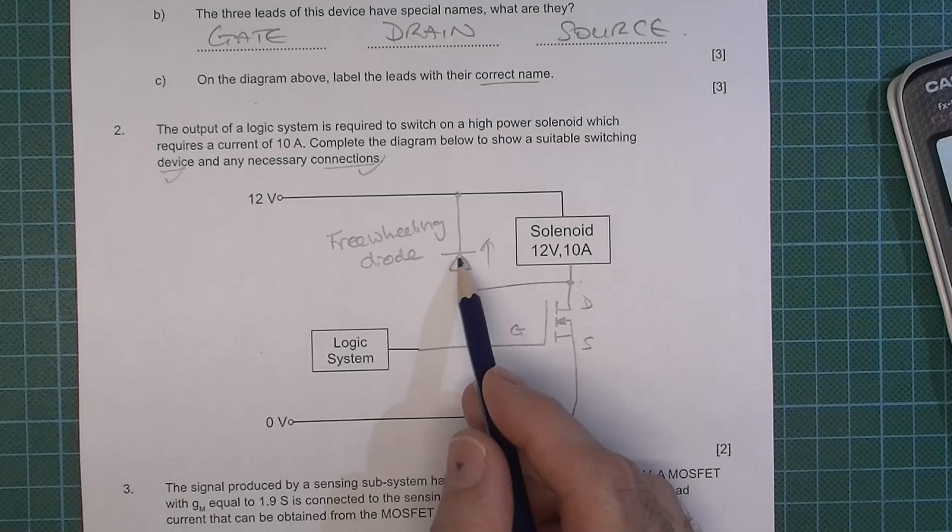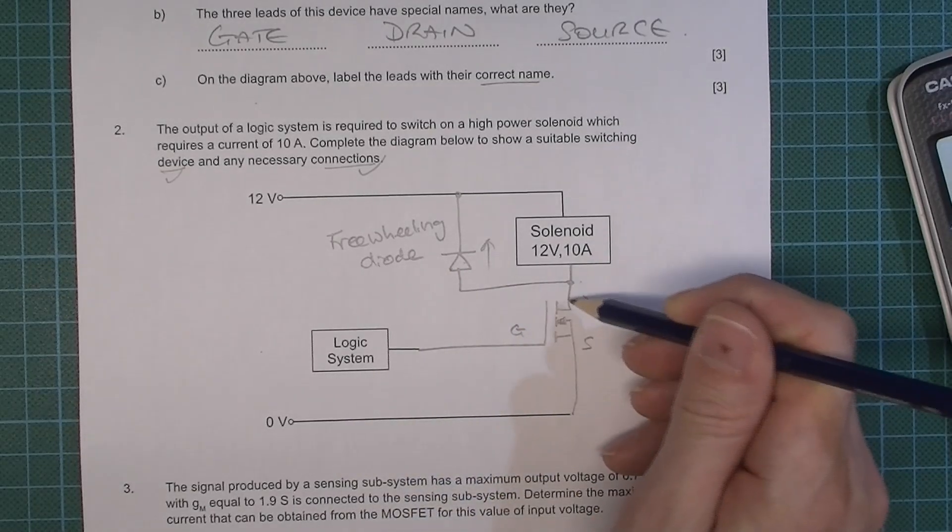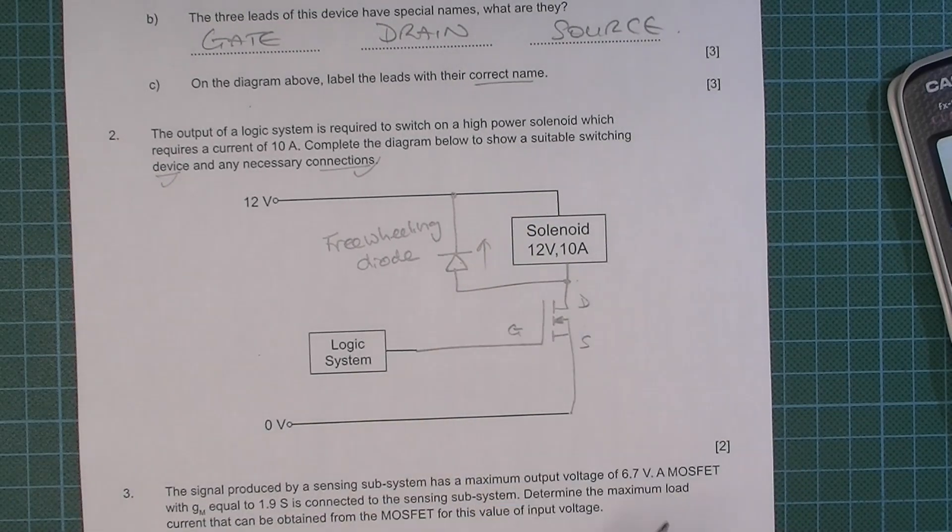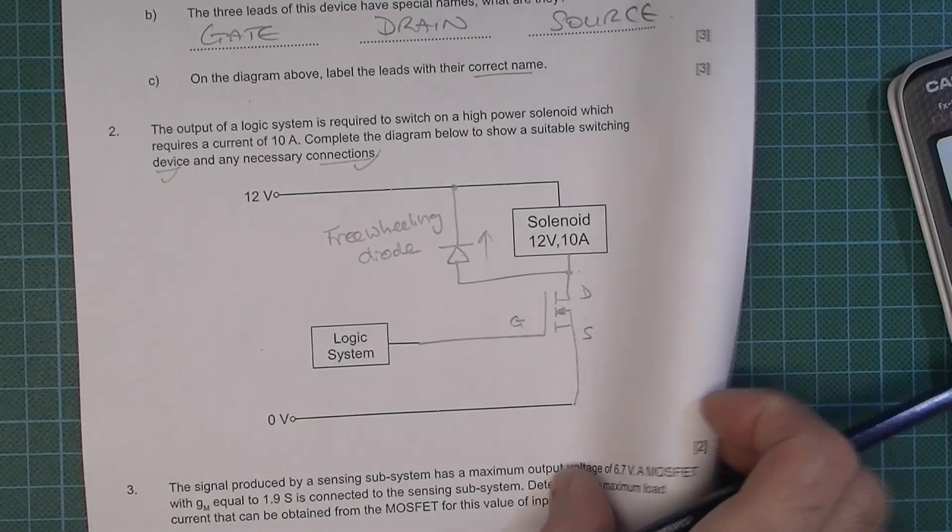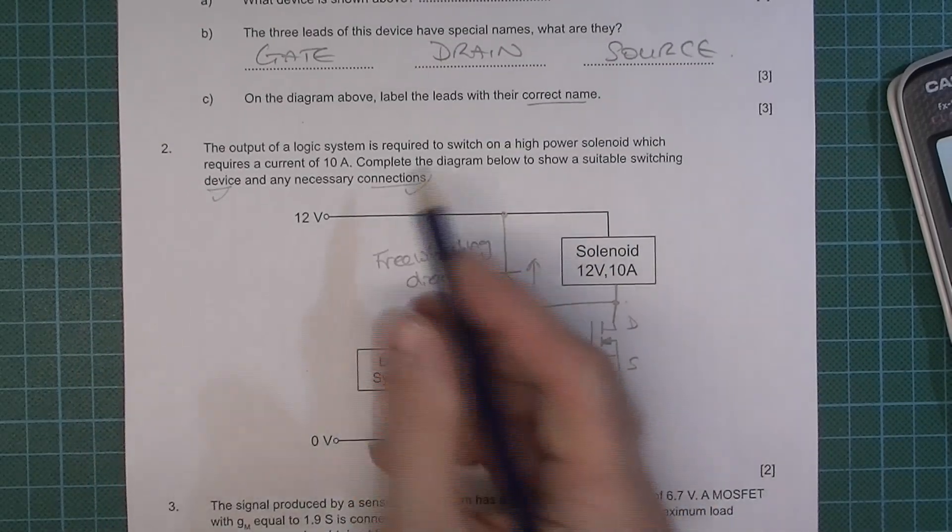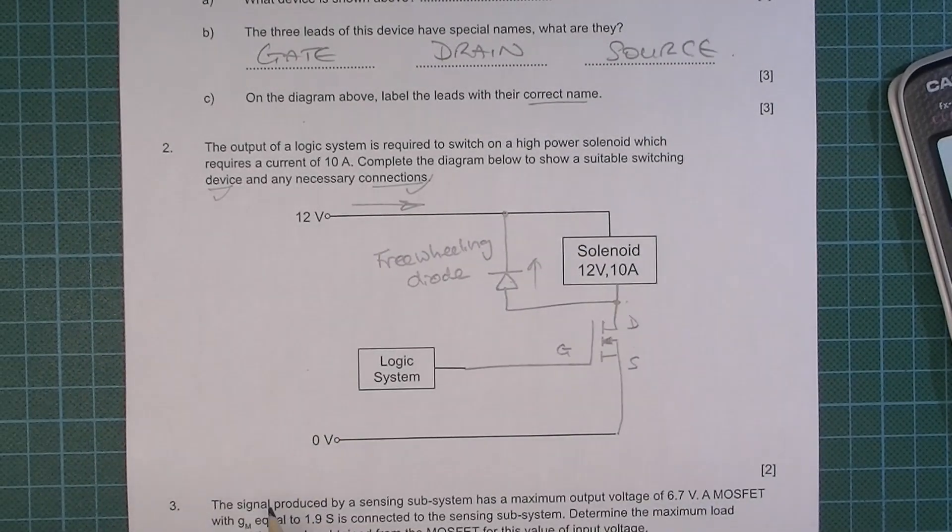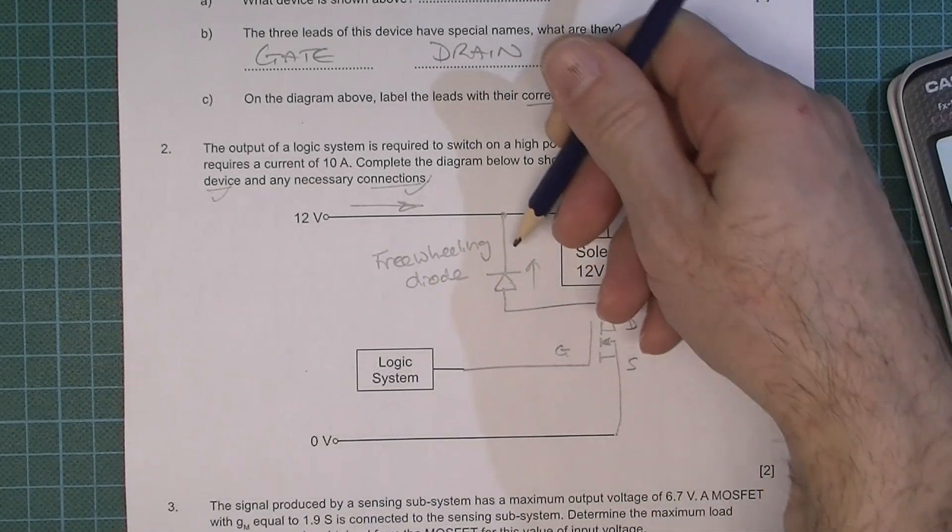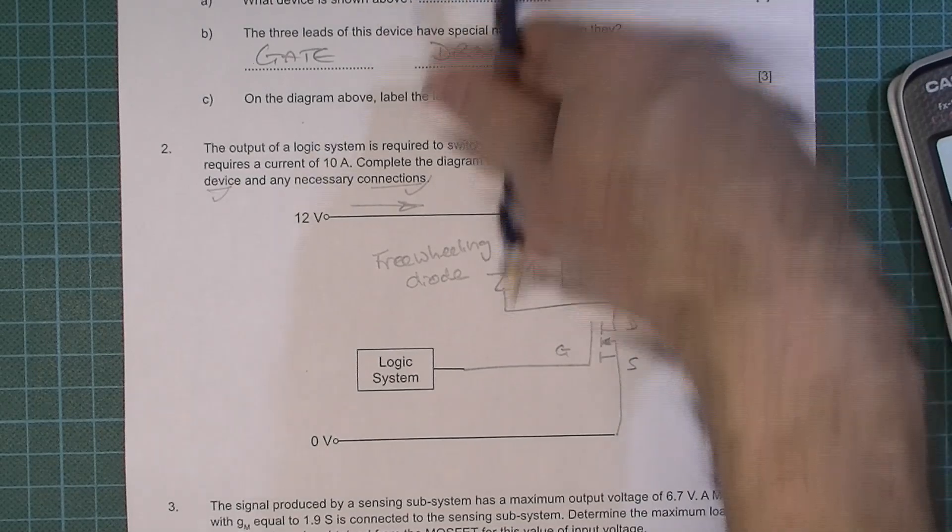And then it can dissipate as heat. Now if you didn't have that freewheeling diode you'd most likely damage your MOSFET. So it really is necessary. So do include one in a practical circuit. Oh by the way I should mention that the normal flow of current would be in that direction and it can't go this way because this diode is what we call reverse biased. It can't go that way.